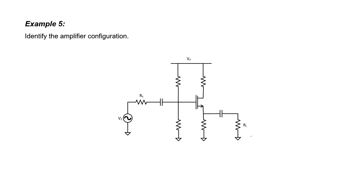What kind of transistor do we have in this circuit — is this a P-channel MOSFET or an N-channel MOSFET? Because the arrow is down here at the bottom pointed outwards, it's N-channel. This is our source, this is our drain, and here's our gate. Our signal passes into the gate and out the source. Therefore, I can conclude that this is a common drain configuration.